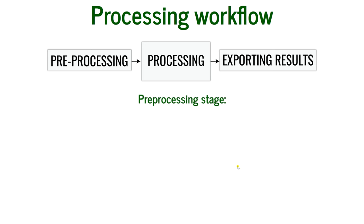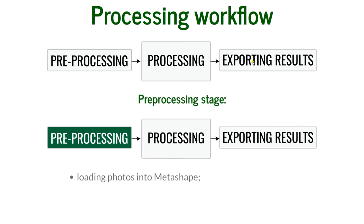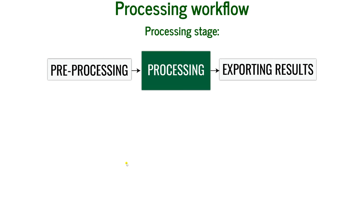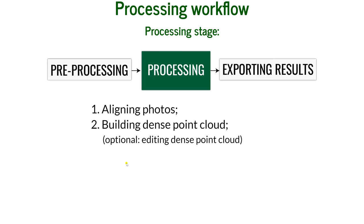The pre-processing stage, which we discussed at the beginning, is the first of three stages: pre-processing, processing, and exporting results. It includes loading photos into Metashape, inspecting the loaded images, removing unnecessary images, and removing blurry images — everything you do before you start clicking the buttons that begin processing.